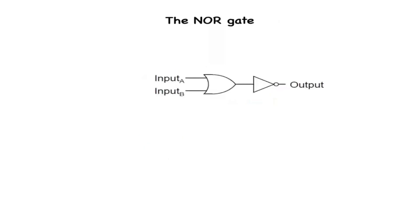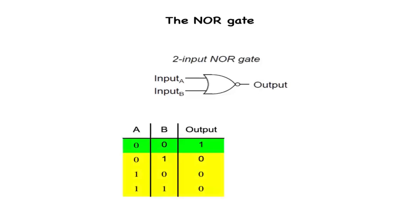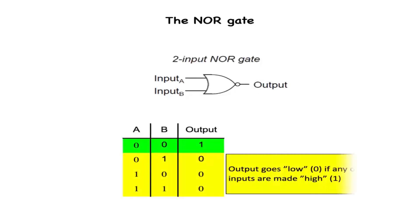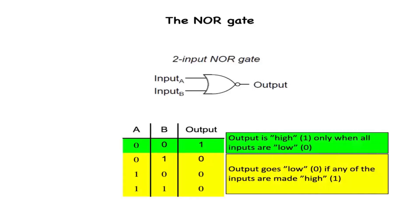As you might have suspected, there exists an inverted OR gate known as the NOR gate, which is an OR gate with its output inverted, just like a NAND gate is an AND gate with an inverted output. NOR gates, like all the other multiple-input gates seen thus far, can be manufactured with more than two inputs. Still, the same logical principle applies: the output goes low (0) if any of the inputs are made high (1). The output is high (1) only when all inputs are low (0).